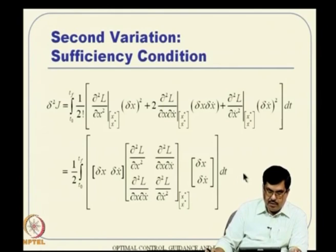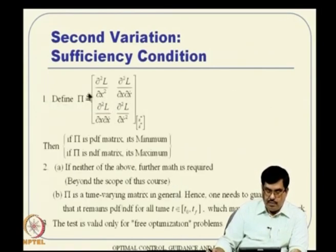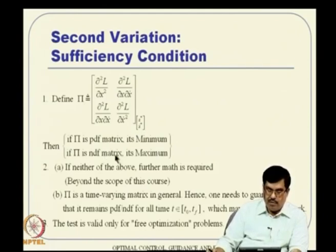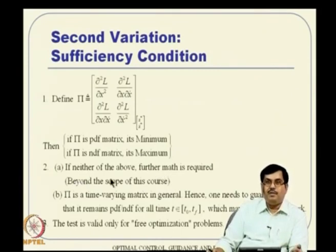We also discussed second variation. Expanding the second term of the Taylor series, we observe this leads to Hessian matrix ideas. We define the matrix Pi, evaluated at the optimum point: if it is a positive definite matrix, it is a minimum; if negative definite, it is a maximum. In a given problem, first evaluate Pi, then check whether it is positive or negative definite. Unlike static optimization, x-star and x-star-dot are time dependent—x-star is an optimal trajectory, a function of time. So Pi is not a constant matrix but a function of time, and it should remain positive or negative definite for all time in the interval.